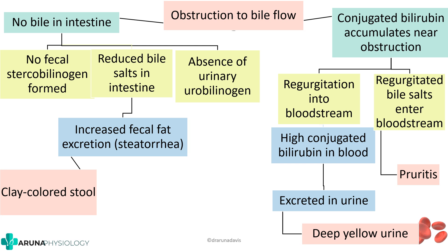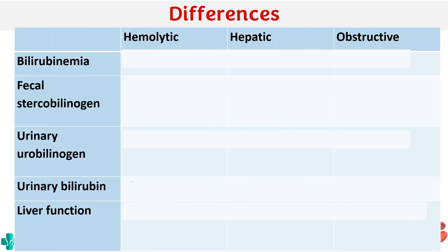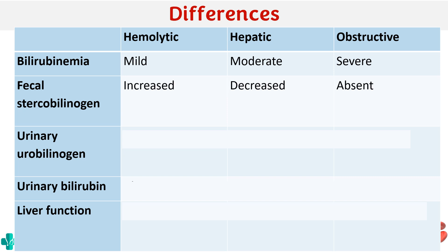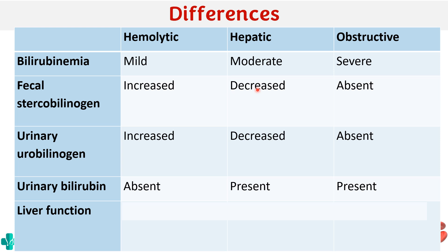Comparing the three types: bilirubinemia is mild in hemolytic, moderate in hepatic, and severe in obstructive jaundice. Fecal stercobilinogen is increased in hemolytic, decreased in hepatic, and absent in obstructive. Urinary urobilinogen is increased in hemolytic, decreased in hepatic, and absent in obstructive. Urinary bilirubin is absent in hemolytic but present in both hepatic and obstructive jaundice. Liver function is normal in hemolytic, impaired in hepatic, and may be impaired in obstructive jaundice.